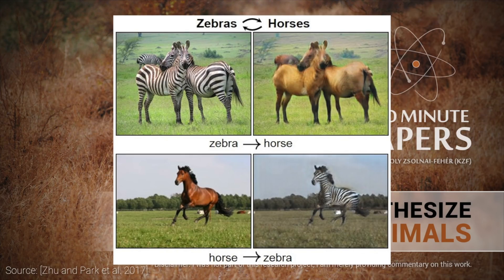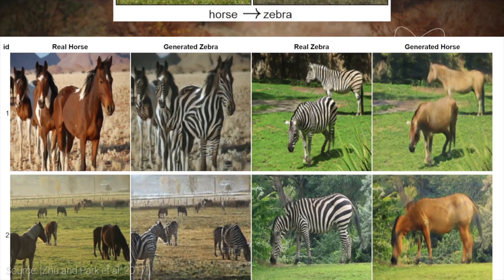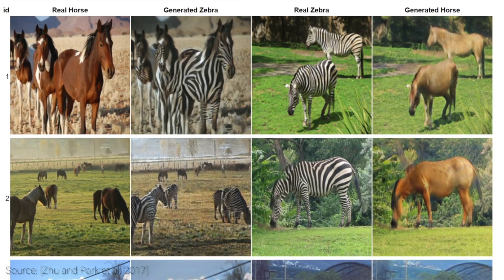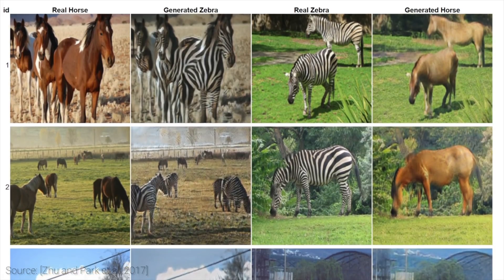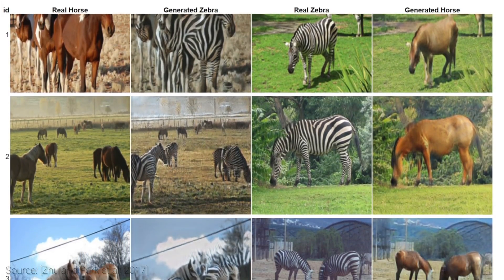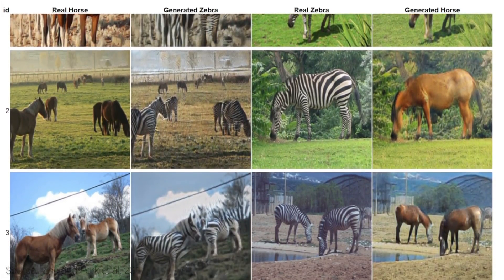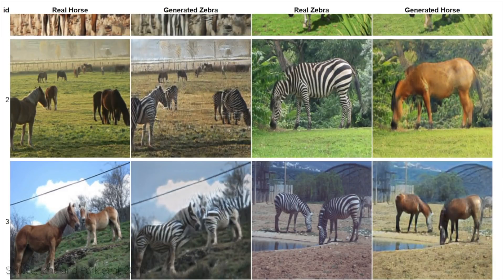This is clearly inferior to how humans think. If I would show you a horse, you could easily imagine — and some of you could even draw — what it would look like if it were a zebra instead. As I'm sure you have noticed by reading arguments on many internet forums, humans are pretty good at generalization. So, how could we possibly develop a learning technique that can look at very few images and obtain knowledge from them that generalizes well?